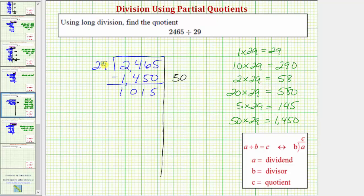By subtracting, we just removed 50 29s from our dividend of 2,465.